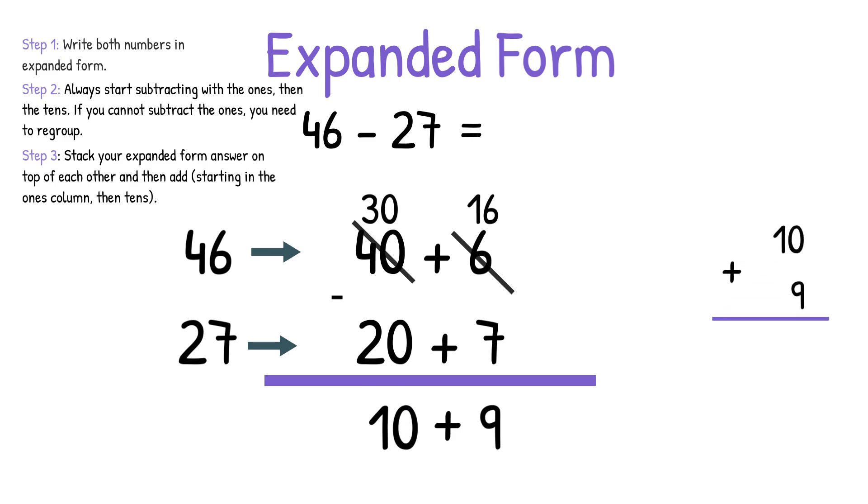So we're going to put 10 plus 9, 0 plus 9 equals 9, and 1 plus nothing equals 1. So again, we got the answer 19. Two different strategies, same answer.